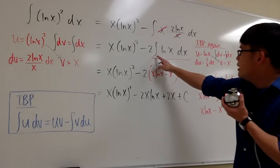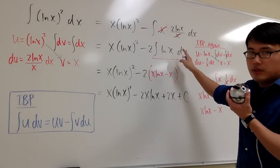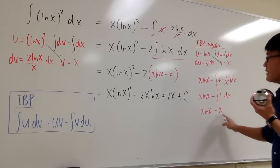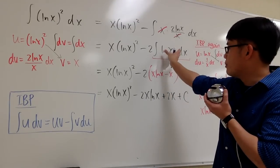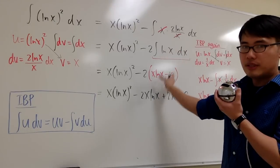In another word, the integral of ln x dx, this will give us x ln x minus x. So I just need to take this, replace with this integral, because this is the answer for that. So that's pretty much it.